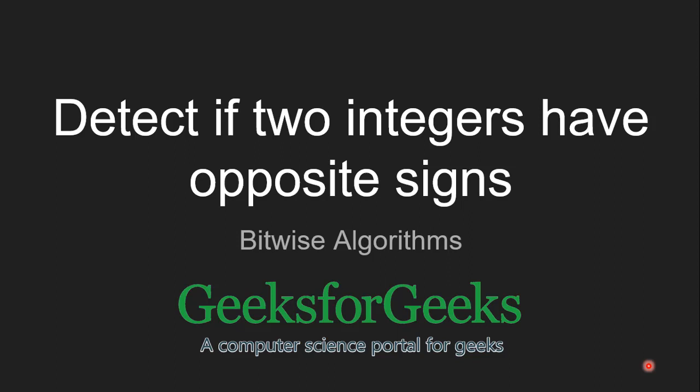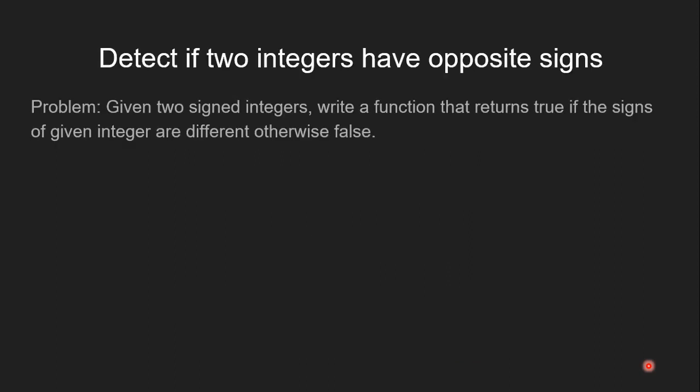Hello guys, welcome to GeeksforGeeks. Today we are going to see another problem: how to detect if two integers have opposite signs. The problem statement is, given two signed integers, write a function that returns true if the signs of the given integers are different, otherwise false.